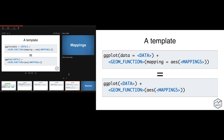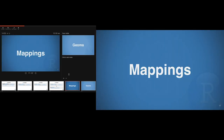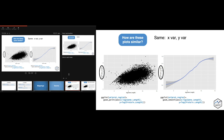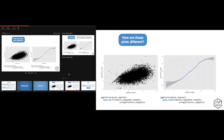The first thing we can change is our geoms. Looking at two plots: they use the same data, the same x variable, and the same y variable, but what's different is the type of plot — the geometric function. Here we have geom_point, which is a scatter plot, and geom_smooth, which is more of a model where you can create trend lines. The geometric object is how we're going to represent our data.